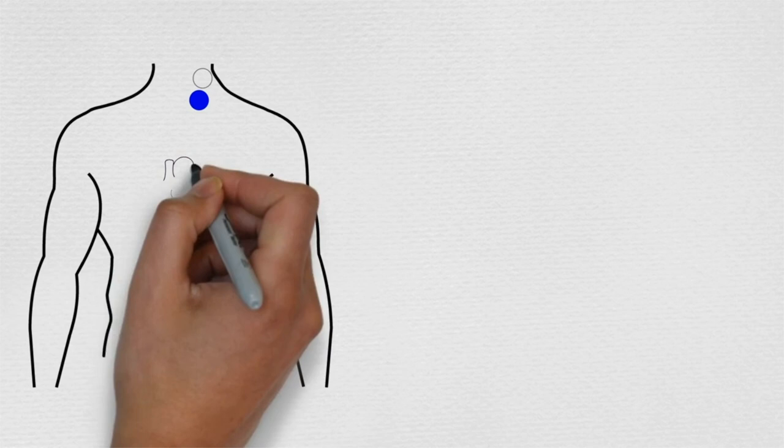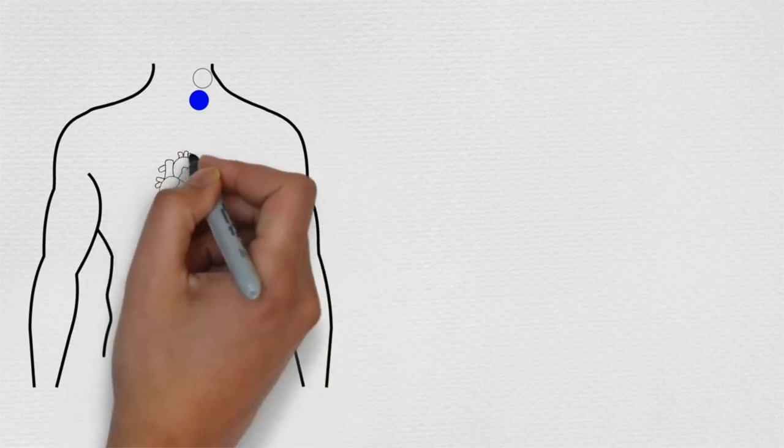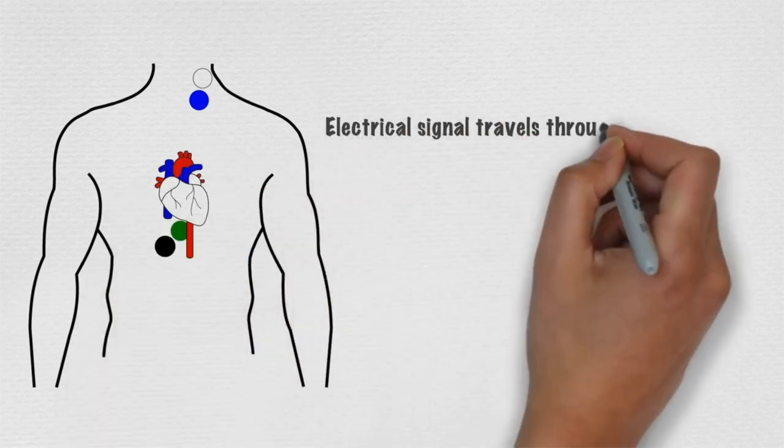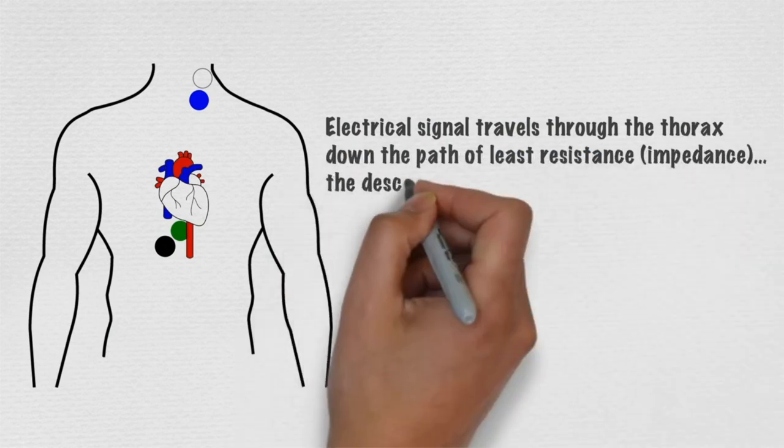The electrical signal will travel from the white and blue emitting electrodes through the thorax down the path of least resistance or impedance, which is the descending aorta, to the green and black receiving electrodes.